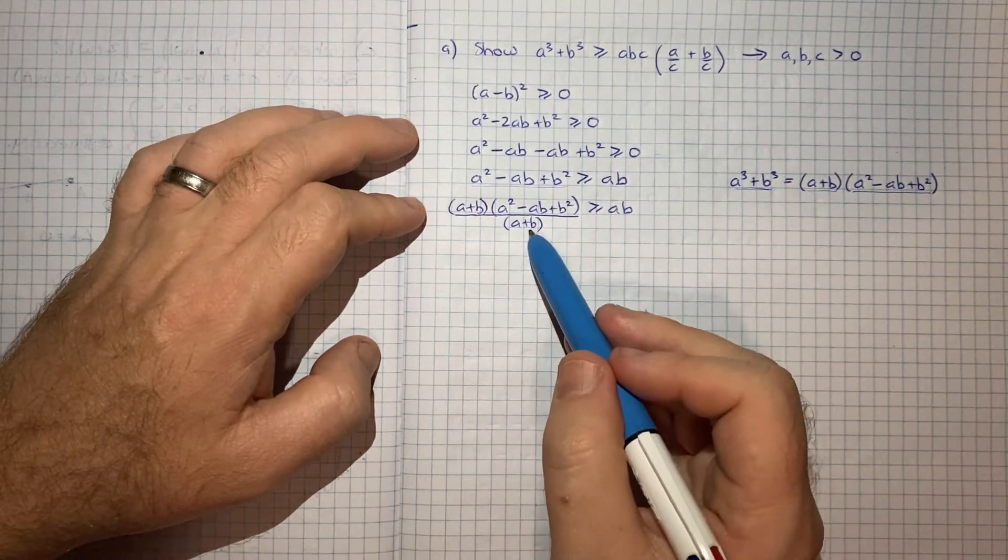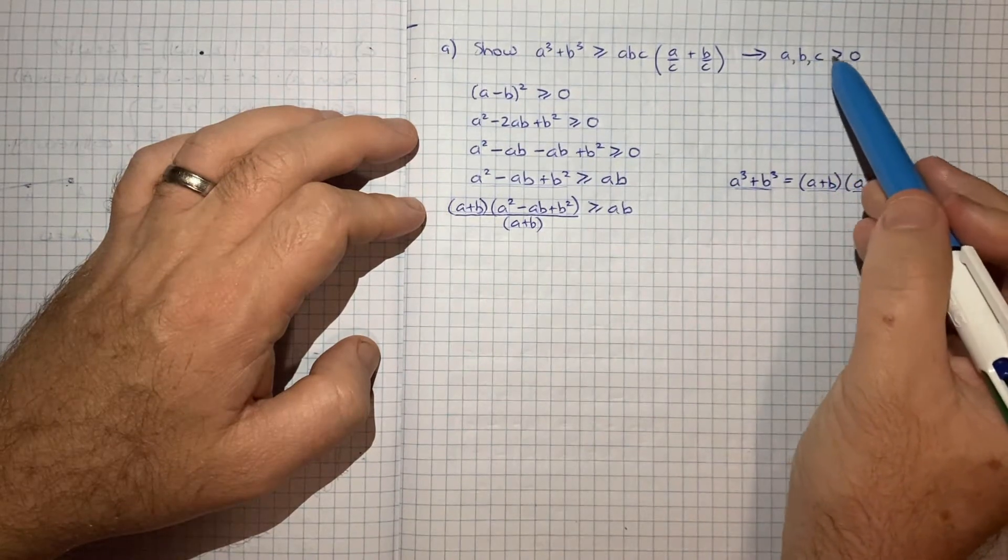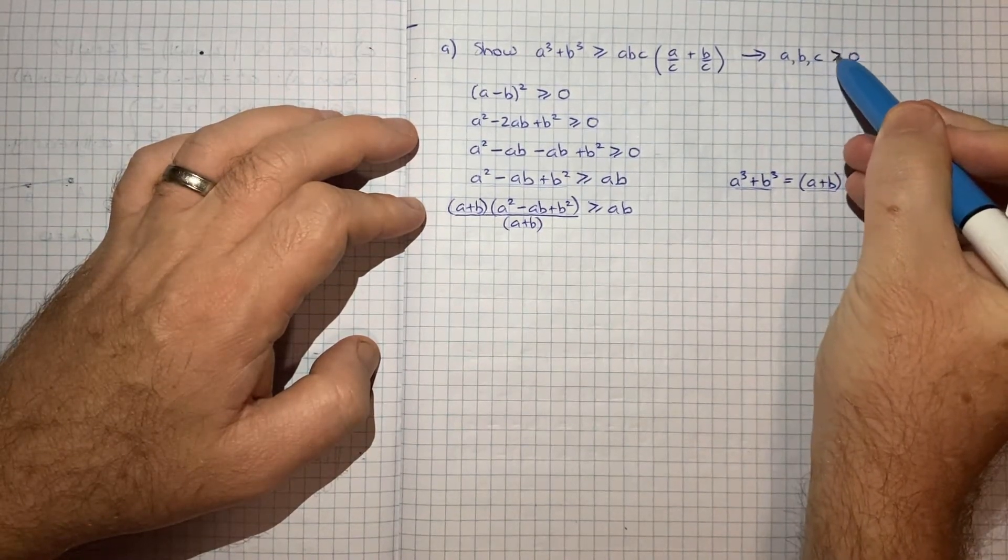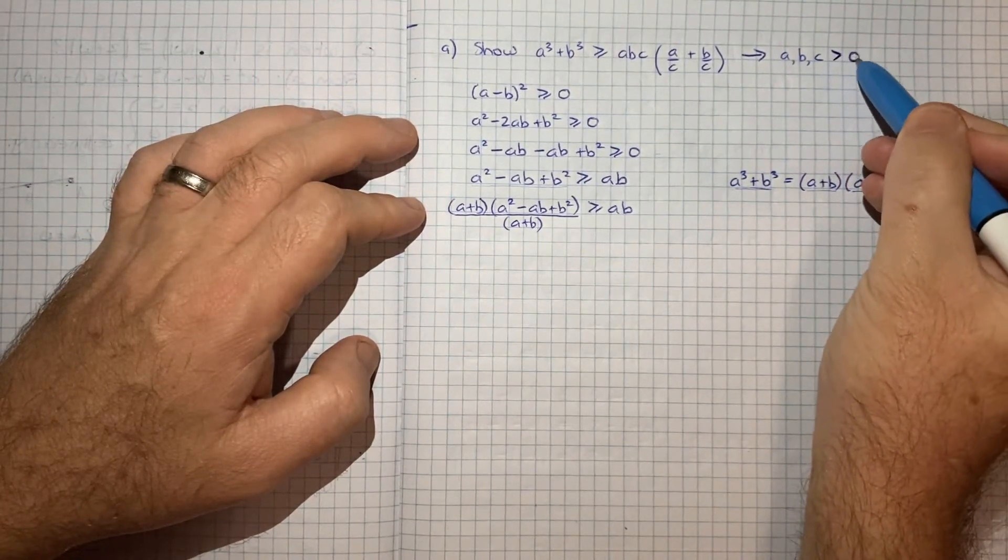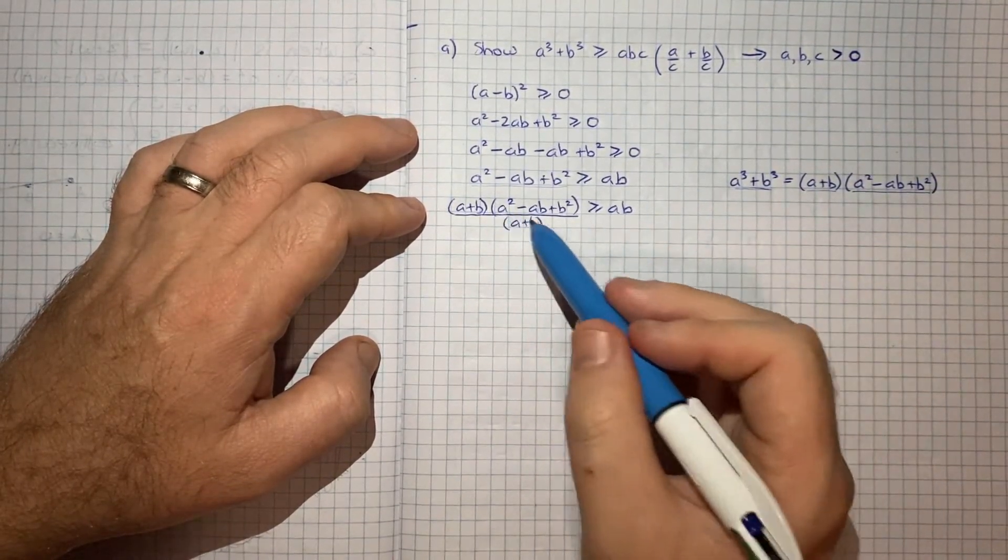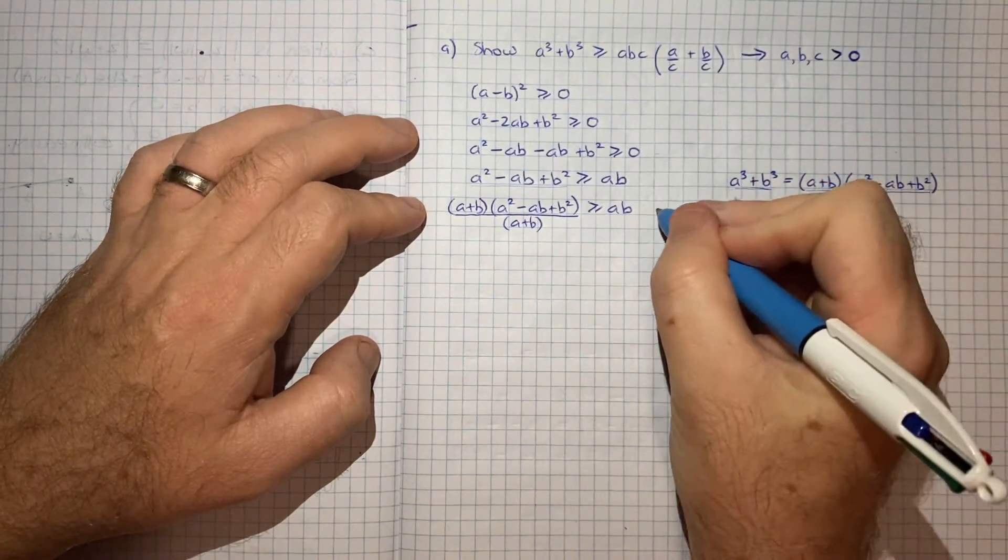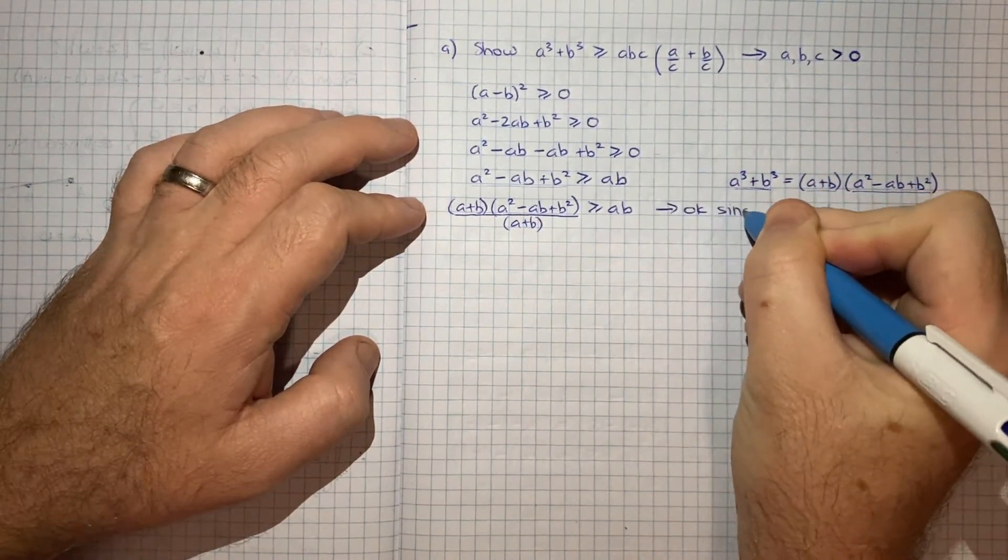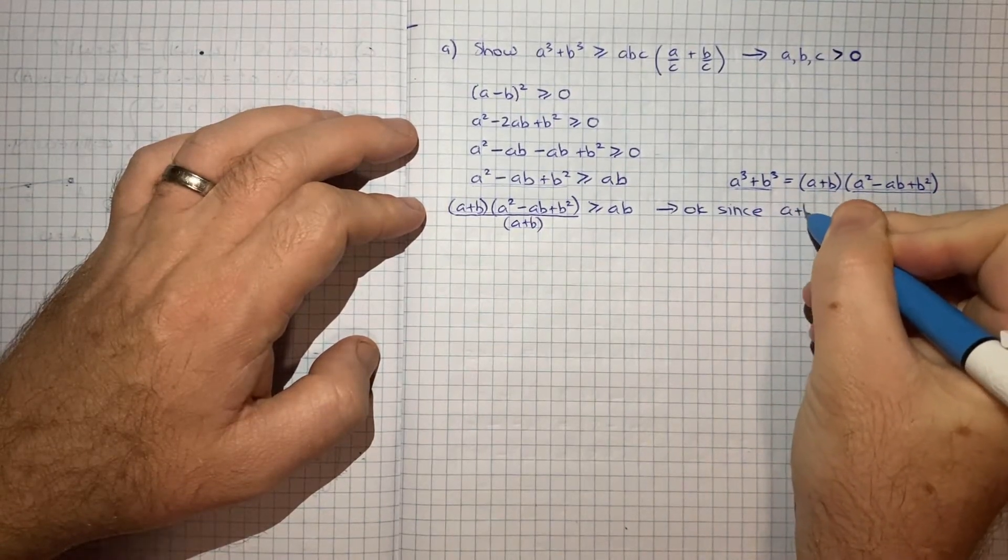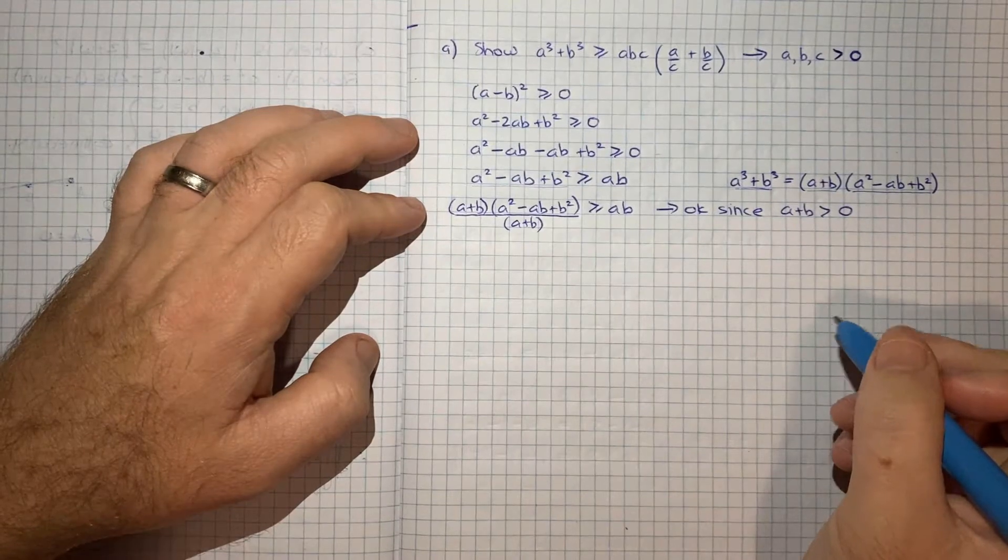And we can do this. There's no risk that we're dividing by zero here because we've got a, b, c greater than zero, not greater than or equal to. So it's never going to be the case that a plus b is equal to zero. So that's something just important to note. So maybe I'll note that. This is okay since a plus b would be greater than zero.